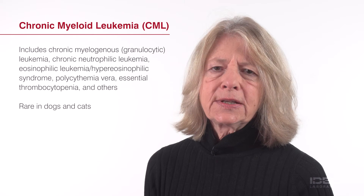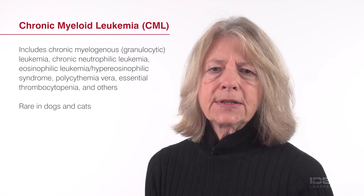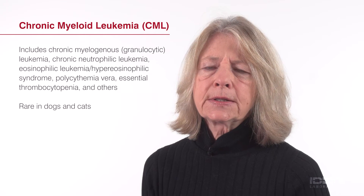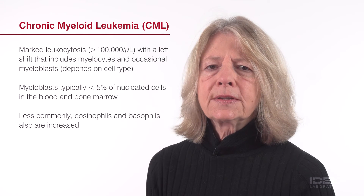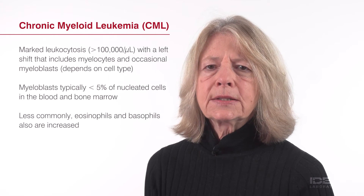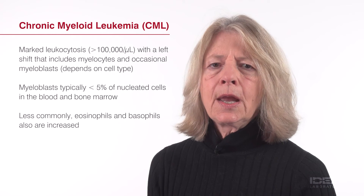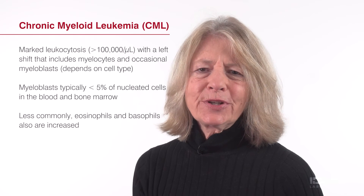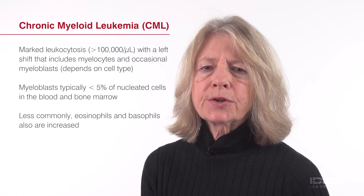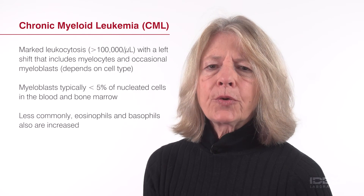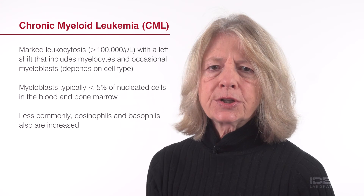CML is rare in domestic animals and is characterized by insidious onset of relatively nonspecific clinical signs. The CBC is variable. Depending on the type of CML, there may be marked neutrophilia with a disorderly left shift in chronic granulocytic leukemia, marked eosinophilia and eosinophilic leukemia, hypereosinophilic syndrome, and erythrocytosis in polycythemia vera. Marked inflammatory responses may be difficult to distinguish from CML involving neutrophils because both can be associated with marked neutrophilia with a left shift, marked granulocytic hyperplasia with disorderly maturation, less than 30% blasts in the bone marrow, and infiltration of the liver and spleen with granulocytic precursors.